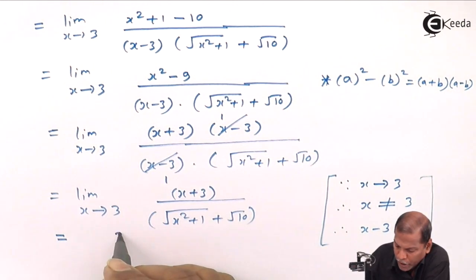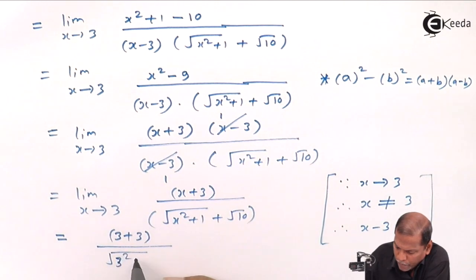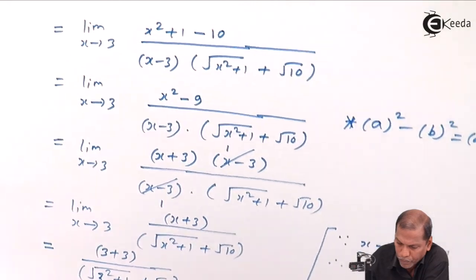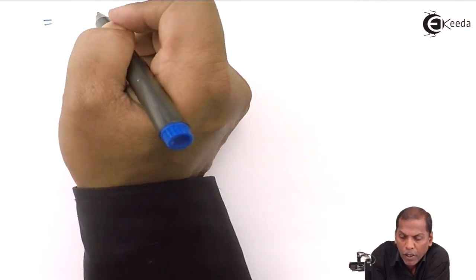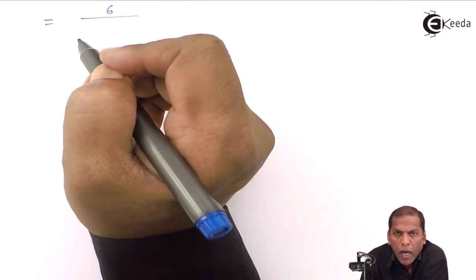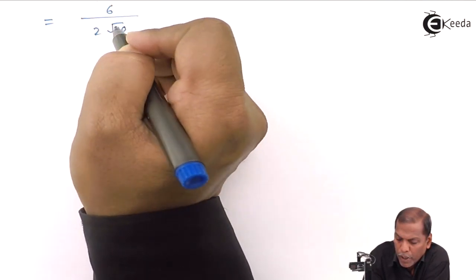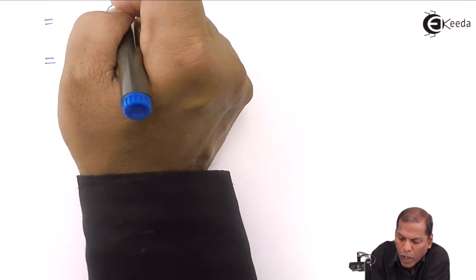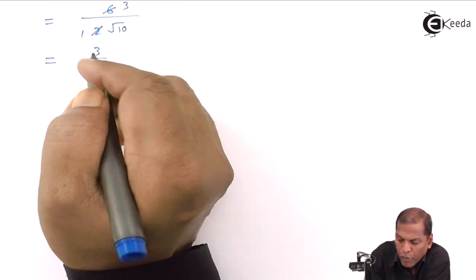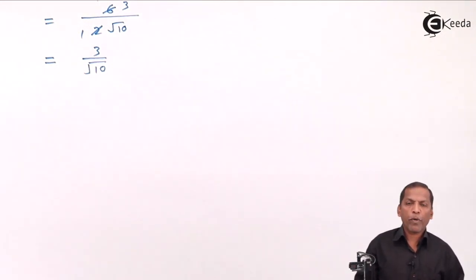So the next step: substituting x equals 3, we get 3 plus 3 in the numerator upon square root of 3 squared plus 1 plus square root of 10 in the denominator. Simplifying further: 3 plus 3 is 6 in the numerator, and 3 squared is 9, plus 1 is 10, so square root of 10 plus square root of 10 gives 2 times square root of 10 in the denominator. Cancelling 2 and 6, the final answer is 3 upon square root of 10. This is the required solution.